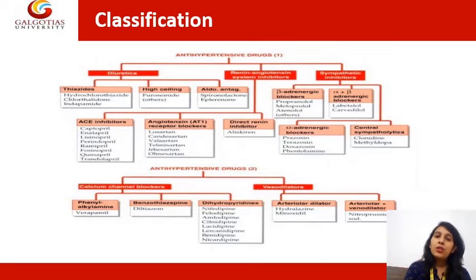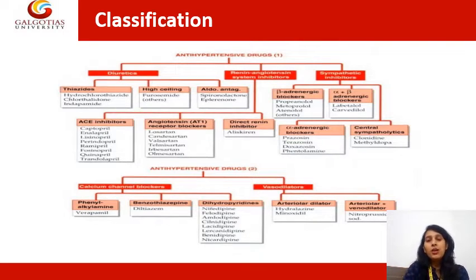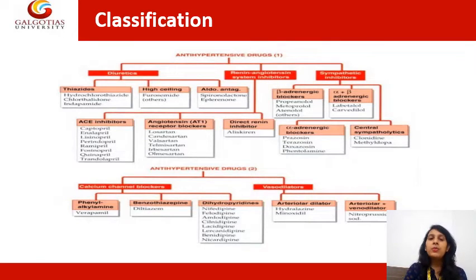The next classification for antihypertensive drugs is calcium channel blockers. In the myocardium, when calcium is released it causes contraction. Contraction causes vasoconstriction, and the pressure exerted in your arteries — the blood pressure — increases. So to decrease blood pressure, we need to decrease calcium concentration by blocking the calcium channels present in myocardium.